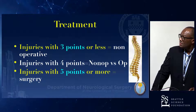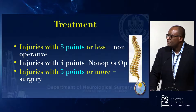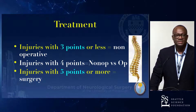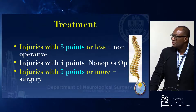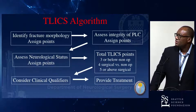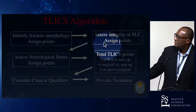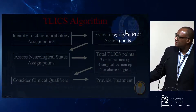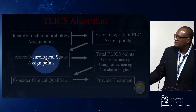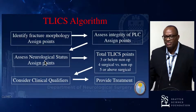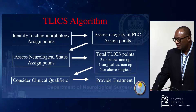The treatment algorithm, as you all know: three points or less is non-operative; injuries with four points equal a non-op versus op situation where the qualifiers come into play; and injuries with five points or more involve surgery. You identify the fracture morphology, you assess the integrity of the posterior ligamentous complex, and then you assess the neurological status. This is where the new modification for the AO classification system is trying to address, and then you go to the TLICS score and provide treatment.